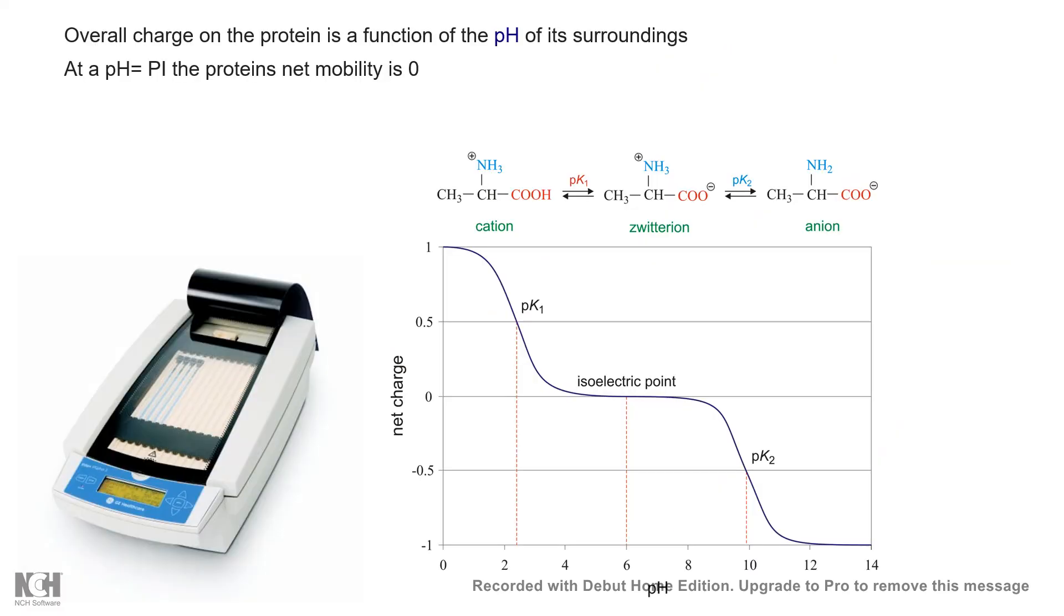Let's talk about the isoelectric point first. As we know, the isoelectric point is a particular pH point where the protein has no net mobility. The mobility of the protein would be zero because the protein would exist as a zwitterion.